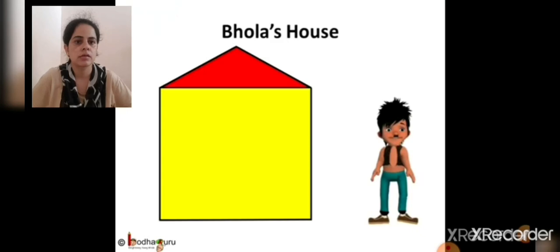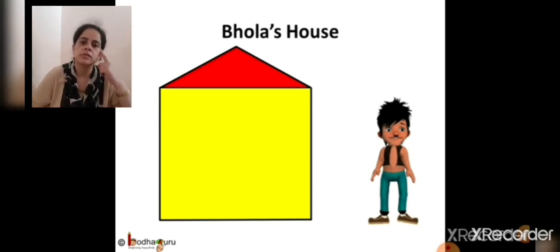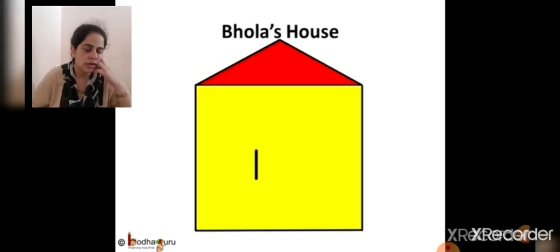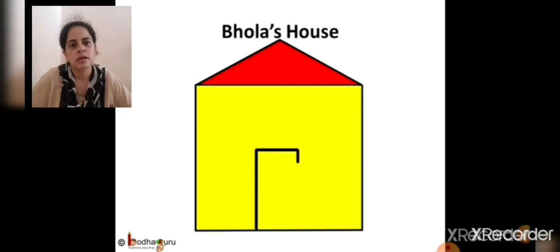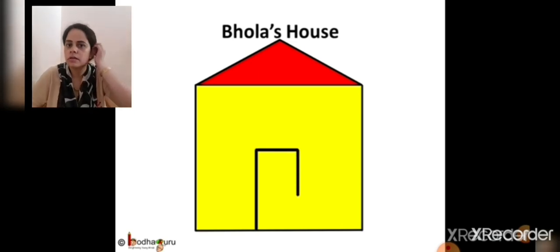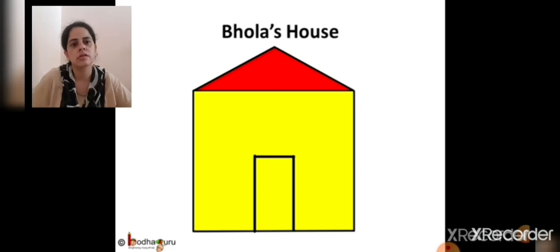This is his home, but wait — there is no door! How will Bola go in? Can we make a door? Yes we can. Let us draw it: standing line, standing line, sleeping line, sleeping line, and again a standing line. Look, the door is ready! Now Bola can enter inside his house.